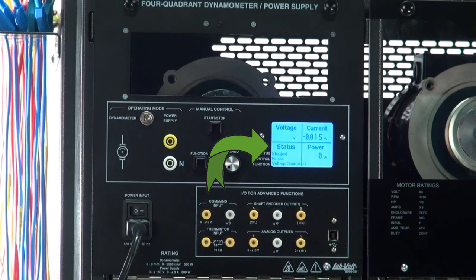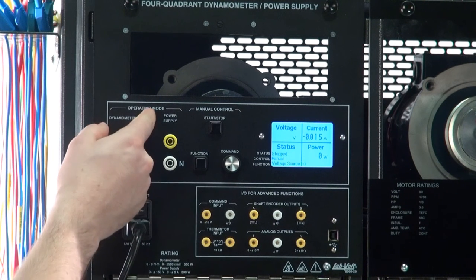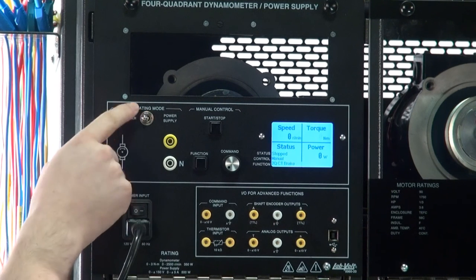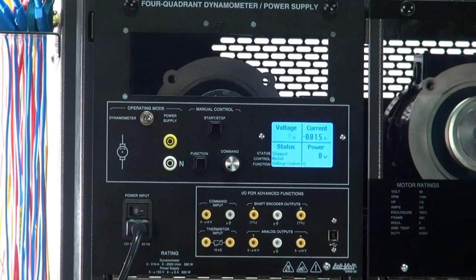As for the dynamometer, the status here tells you if the function is started or not, if it is controlled by computer or by the front panel, and what the function's name is. Please note that when using the power supply functions, you can't use functions related to the dynamometer. To do so, you need to switch the operating mode back to dynamometer.